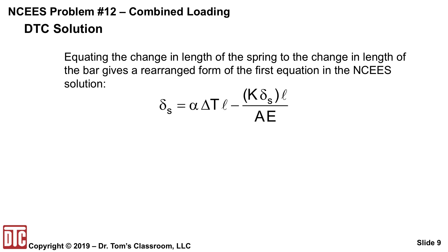Now, equating the change in length of the spring to the change in the bar gives a rearranged form of this first equation that you see in the NCEES solution. The delta S is the alpha delta T L is how much it gets longer, and then the minus K delta S L over AE is how much it gets shorter because the force in the spring has increased.